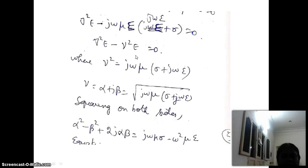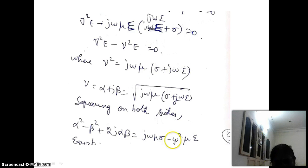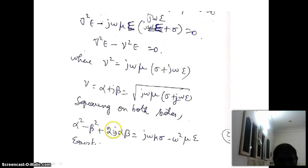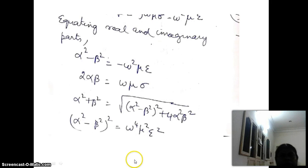Now we equate the real and imaginary parts. Equating real parts: alpha squared minus beta squared equals minus omega squared mu epsilon. Equating imaginary parts: 2 alpha beta equals omega mu sigma.